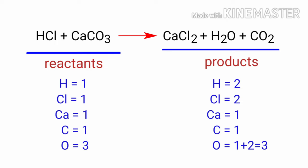In this equation we need to balance the Hydrogen and Chlorine atoms. To do this we need to put a coefficient of 2 in front of HCl.